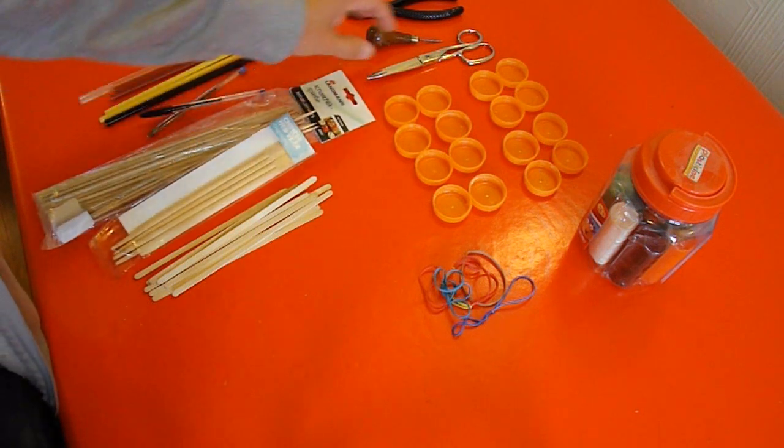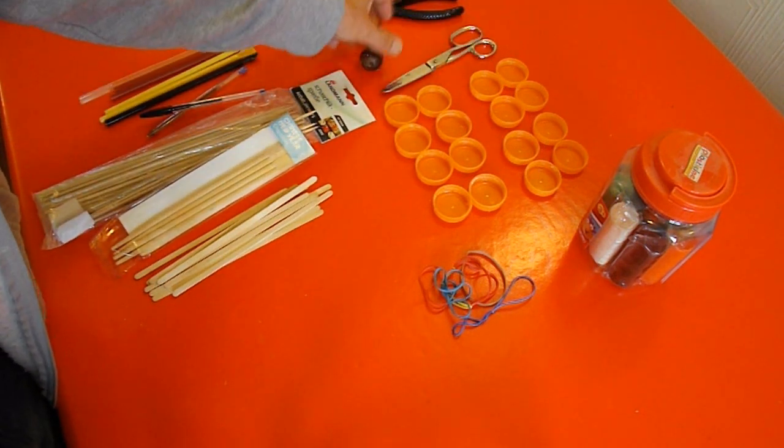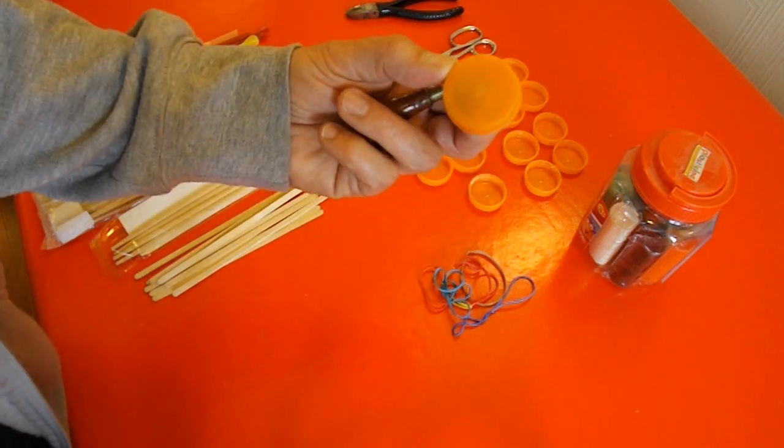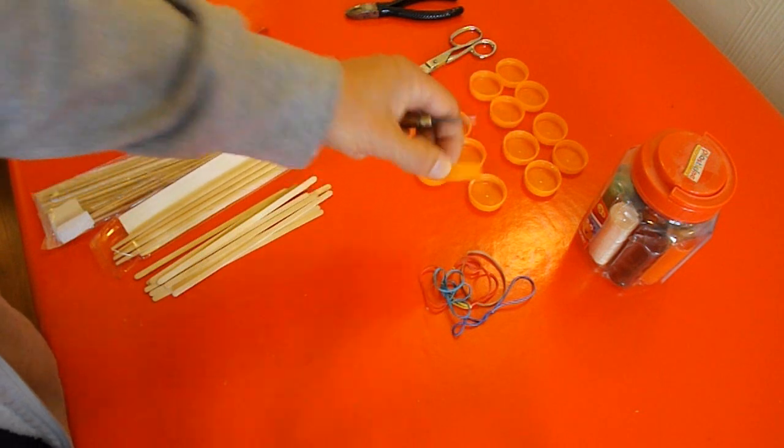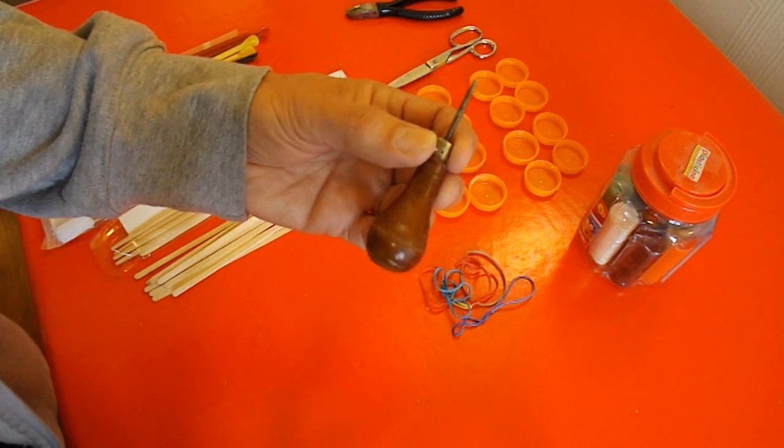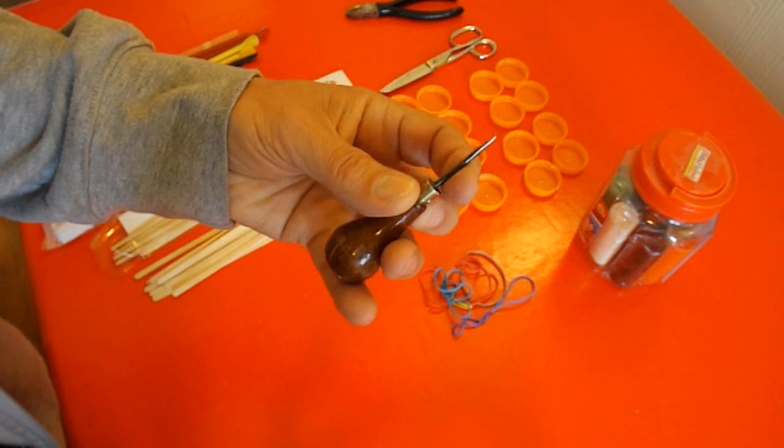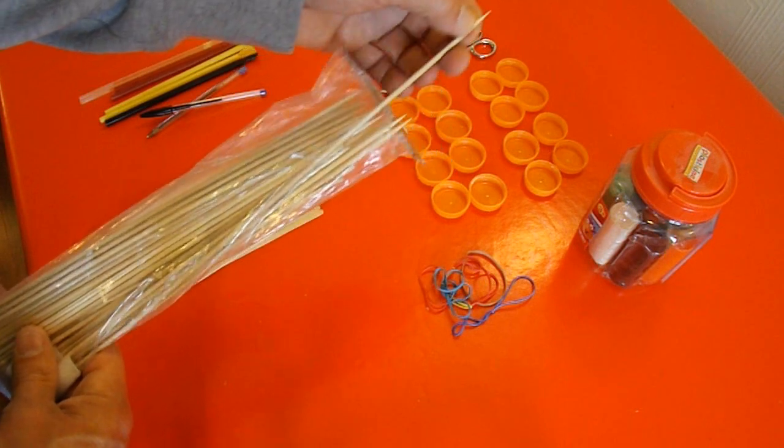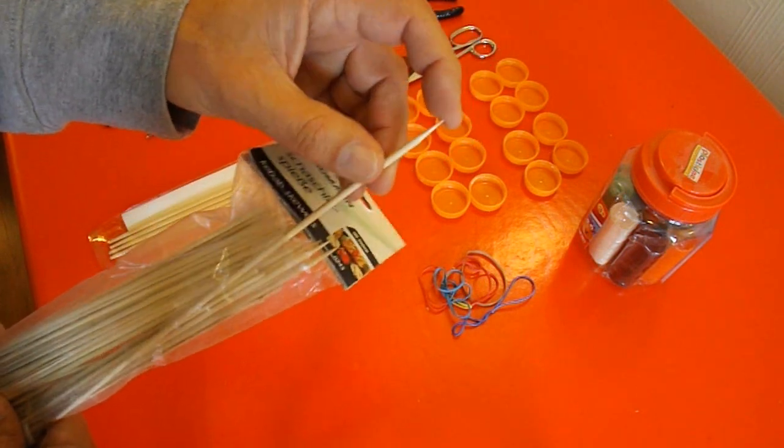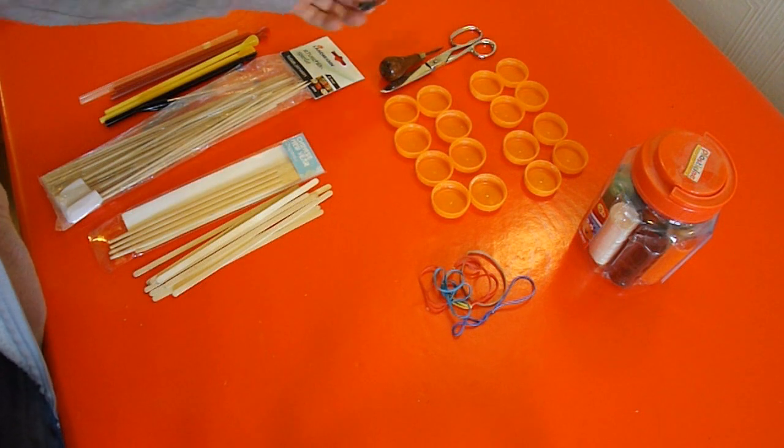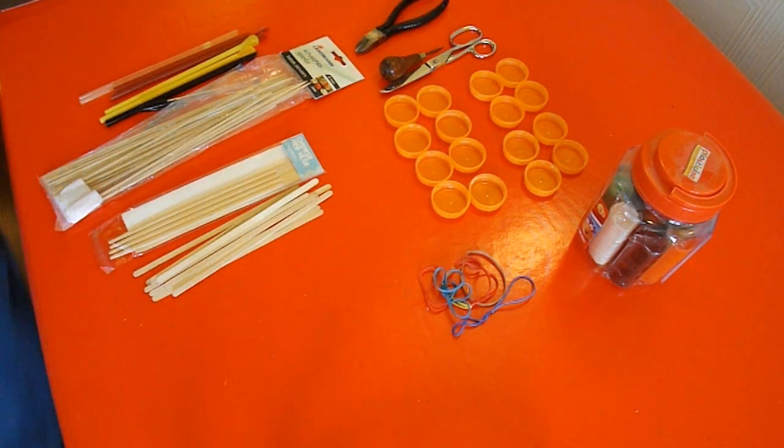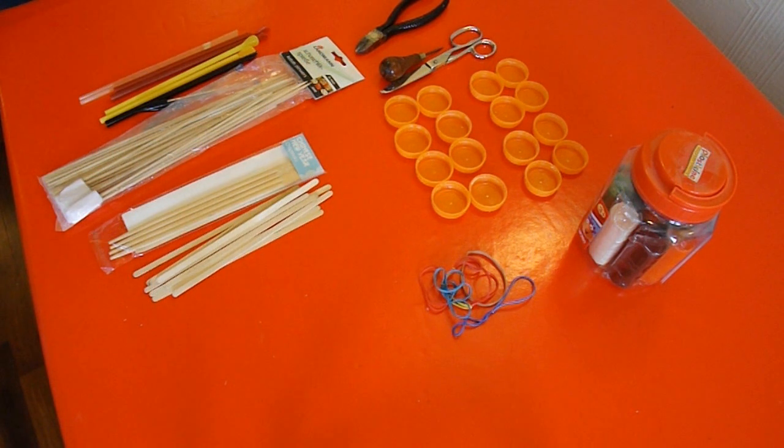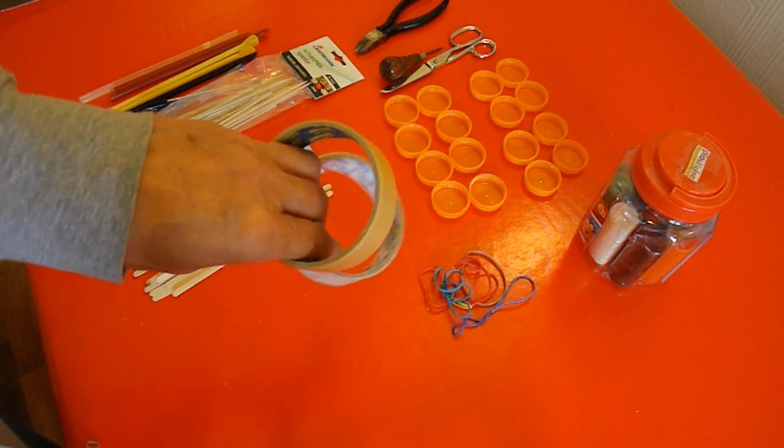And then for tools, some scissors. You usually need something sharp to make a hole in the bottle tops to put the axle through. So that's what I use, it's called a bradawl. But you could use a nail. In fact, if the plastic's soft enough and you're using barbecue skewers, you can usually just push it through using the point. Probably need some cutters and some sort of sticky tape.